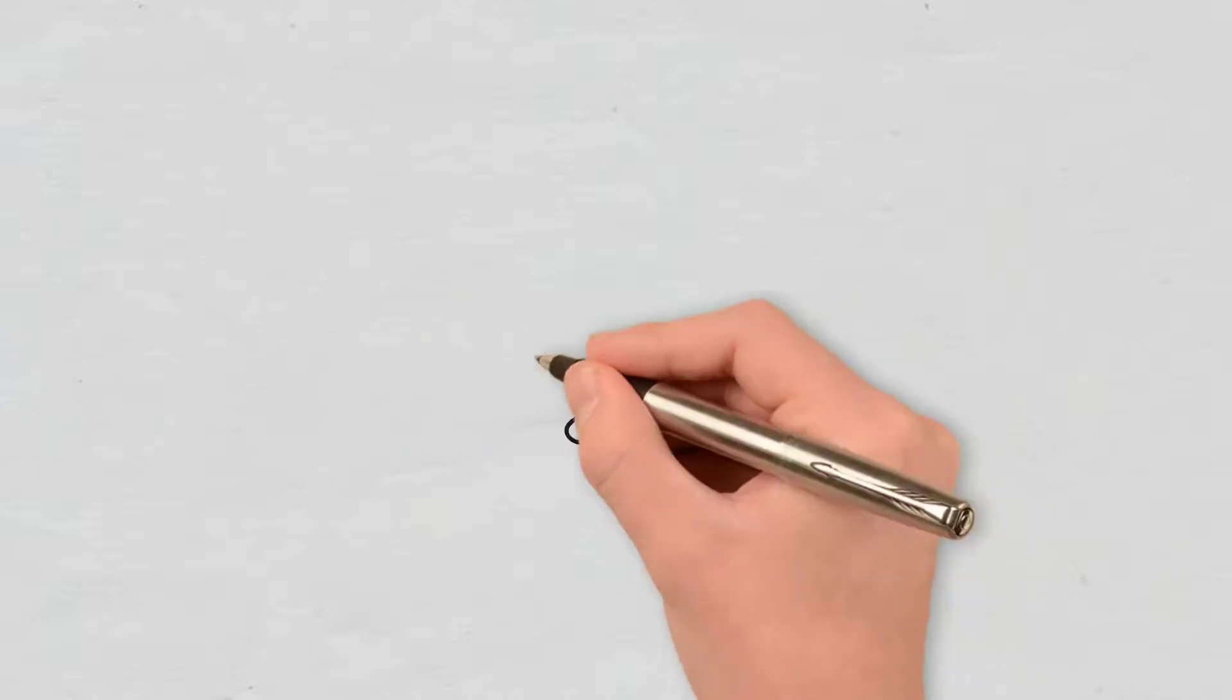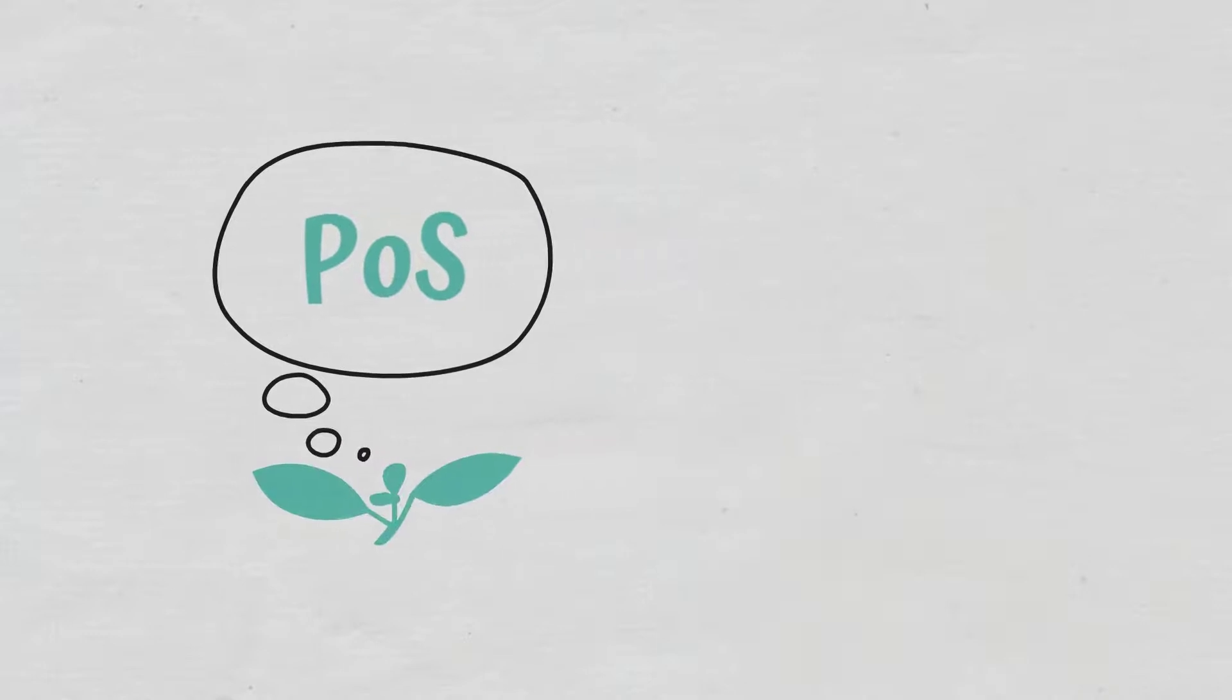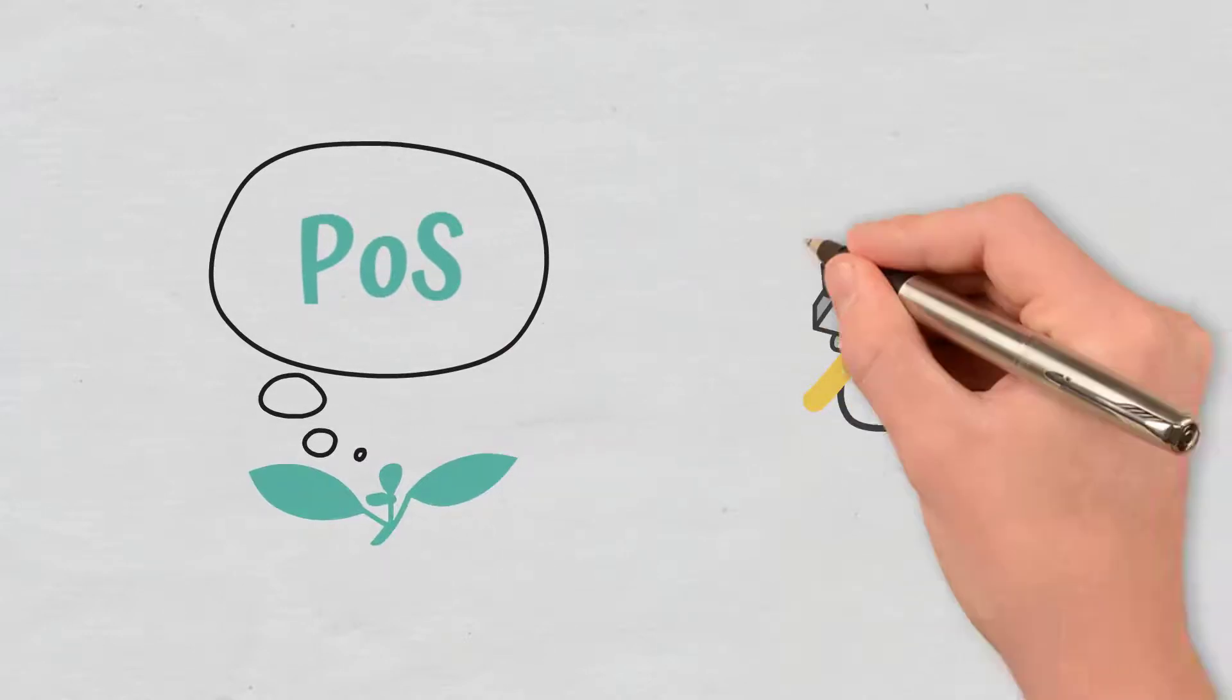Proof of Stake is seen as being more eco-friendly than Proof of Work because it does not involve high energy consumption.